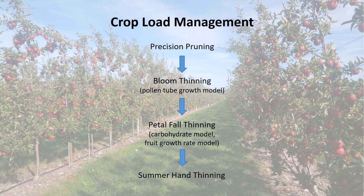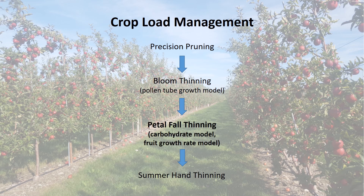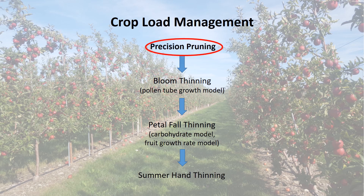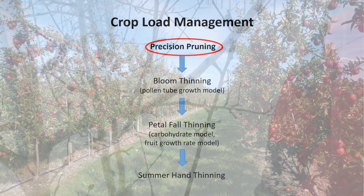Precision crop load management includes precision pruning during dormancy, followed by bloom thinning based on the pollen tube growth model, petal fall sprays using carbohydrate and fruit growth rate models, and hand thinning if trees are still too heavy during the summer. This video will focus on the first step: precision pruning.